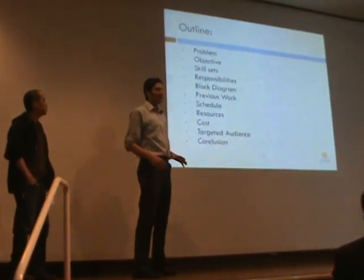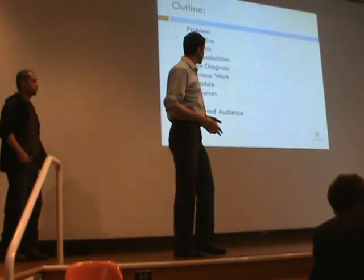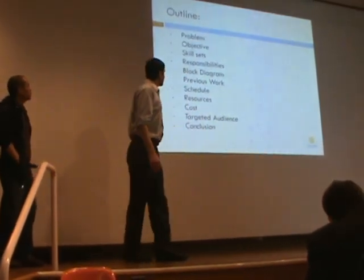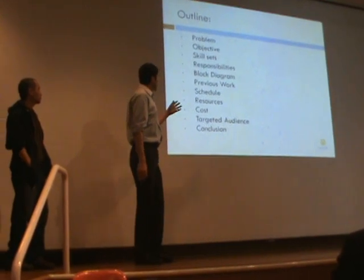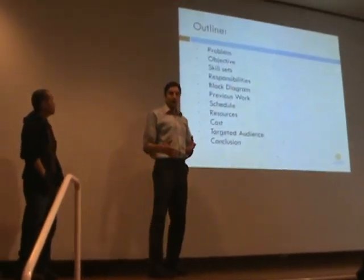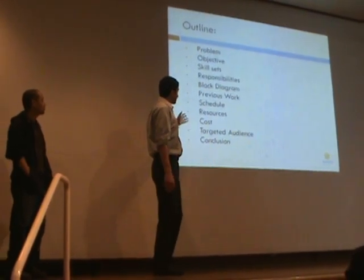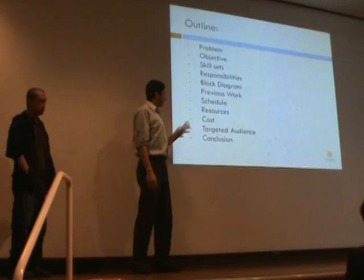In this presentation, we're going to talk about the problem. First, we have to find out what the problem exactly is, and then we're going to take a look at the objective, what exactly we're trying to do. Then we're going to talk about the skill set, our responsibilities, how our device is going to work, and then our schedule and the cost, and then wrap up with the conclusion.